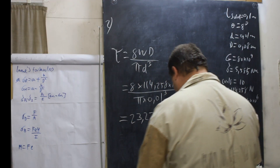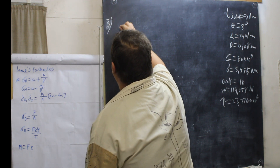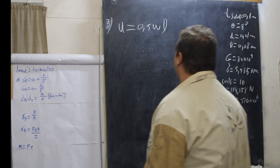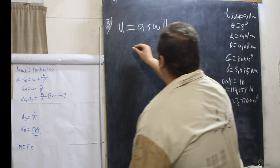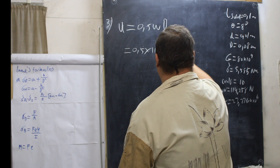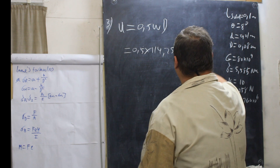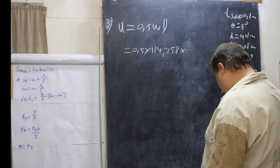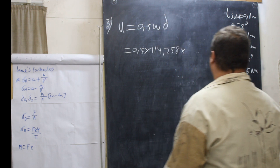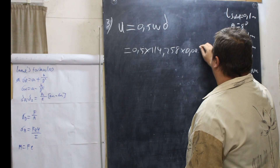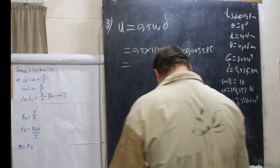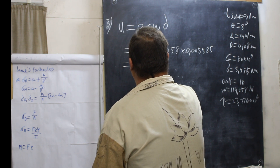Number three — the strain energy, which is very simple. U = 0.5 × W × δ = 0.5 × 114.258 × 0.005585, which equals U = 0.334 J.